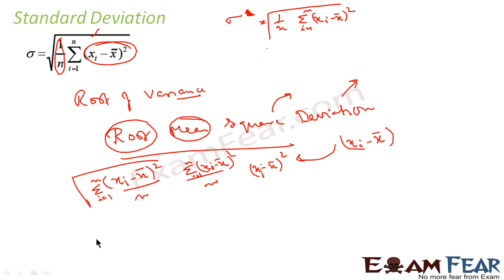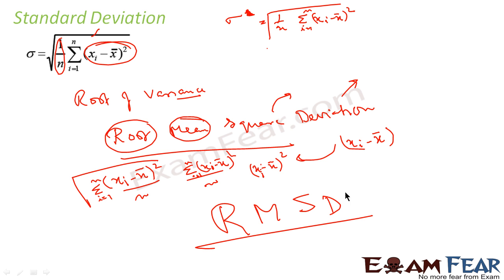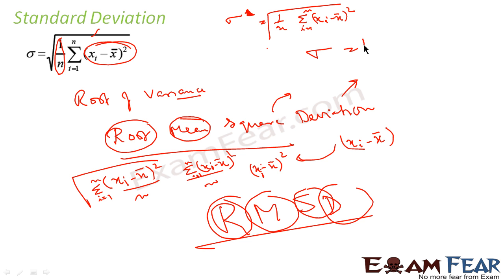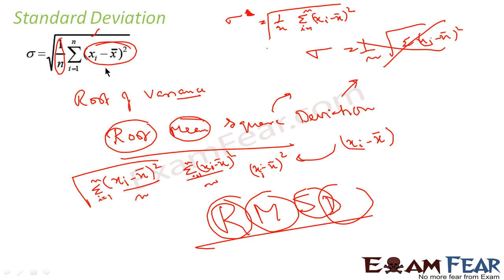So standard deviation is nothing but root mean square deviation. First you find the deviation, then you square it, then you find the mean, and then you get the root — the root is at the topmost level. Please note: a lot of students write 1 by n outside the root, which is wrong. n is always inside. Just remember root mean square deviation. Now we will take some examples.